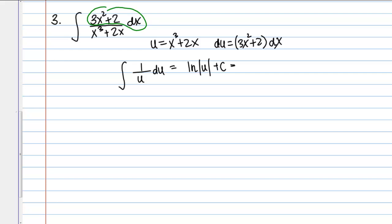This is the natural log of the absolute value of u plus C. Then, as my last step, I just want to put back in u so that I'm in terms of my original variables. This is the natural log of the absolute value of x cubed plus 2x plus C. That's my final answer.